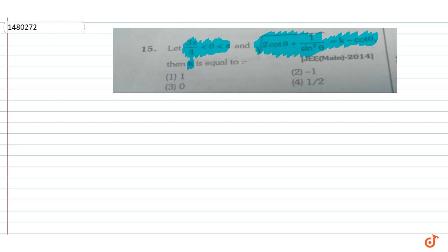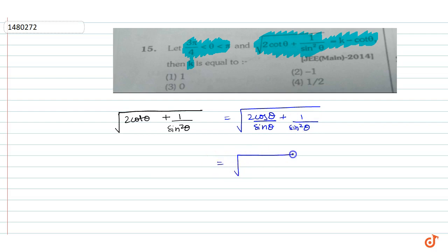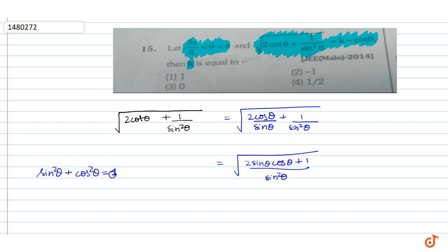We have √(2cotθ + 1/sin²θ). We can write this as √(2cosθ/sinθ + 1/sin²θ), which becomes √((2sinθcosθ + 1)/sin²θ). Using the identity sin²θ + cos²θ = 1, the numerator becomes sin²θ + 2sinθcosθ + cos²θ.